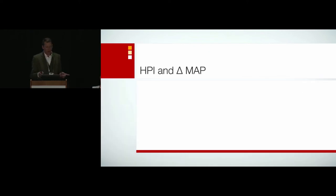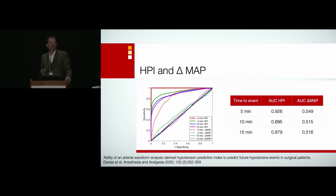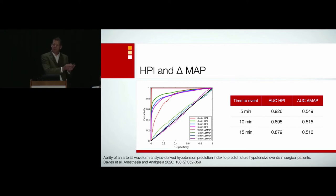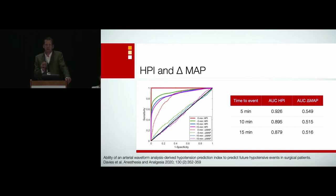These things are only useful if they are better than what we currently measure. Let's focus on mean arterial pressure. If you look at changes in MAP 5, 10, and 50 minutes before hypotension occurs — whether you choose 30 seconds, 1 minute, or 5 minutes — they are just about as good as tossing a coin. Changes in mean arterial pressure do not predict impending hypotension. And it doesn't matter what you measure — stroke volume, heart rate, SVV — they do not predict hypotension with any accuracy.